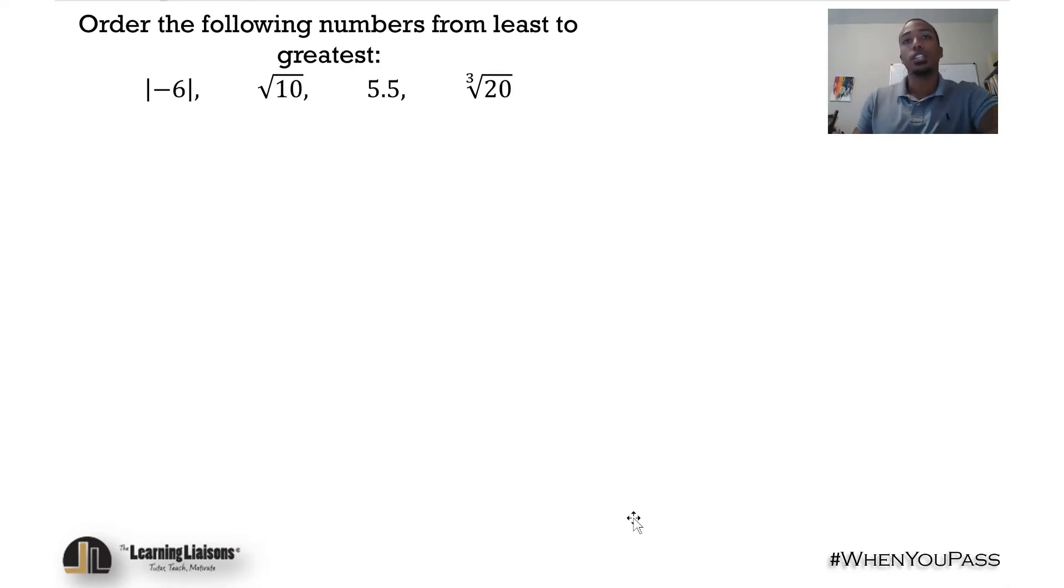The absolute value of negative 6 - take a second, think about that. Remember it measures the distance from 0. How far is negative 6 from 0? Well, it's 6 units just in the left direction, so this would be 6.